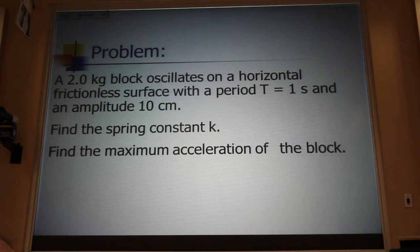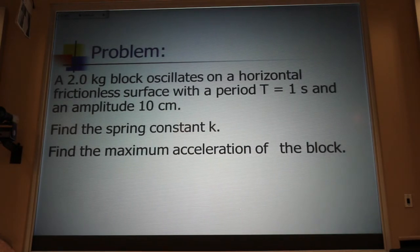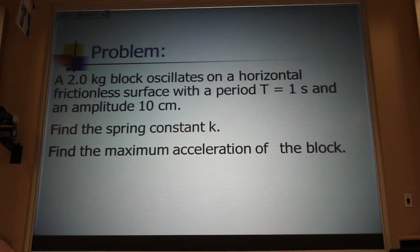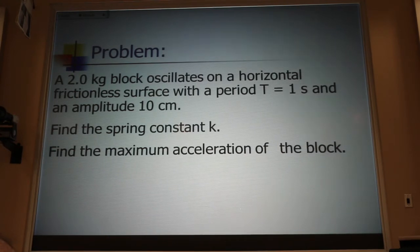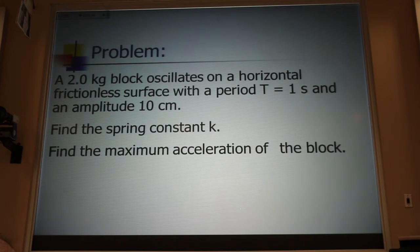Let's solve this problem. We've got a 2-kilogram block oscillating back and forth on a horizontal frictionless surface. Its period is one second, has an amplitude of 10 centimeters. Find the spring constant k. Just think about that for a moment. You have two different ways to find a spring constant, static and dynamic. Which method are you going to use here? Talk to your neighbor. Are you going to use static or dynamic?